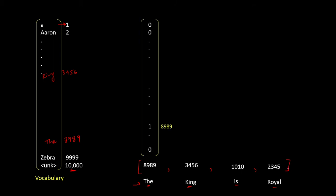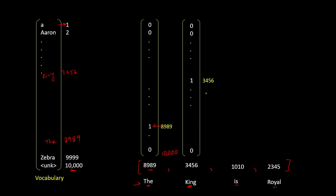One-hot encoding means that this number will be converted into a vector, and the size of this vector will be 10,000. All the values in this vector will be 0 except the value at position 8,9. Similarly, the word 'king' will be converted into a one-hot vector, which is a vector of size 10,000.